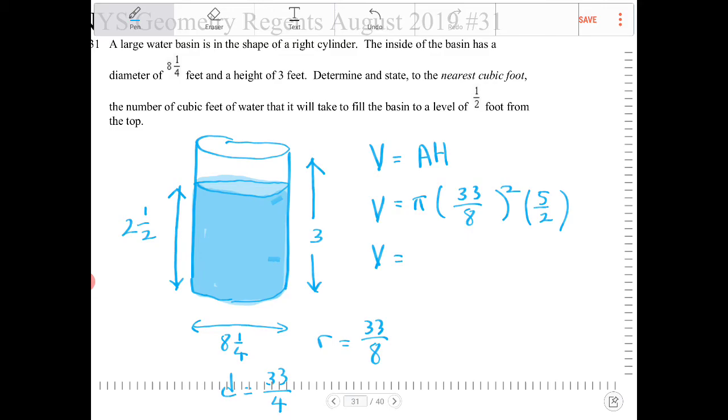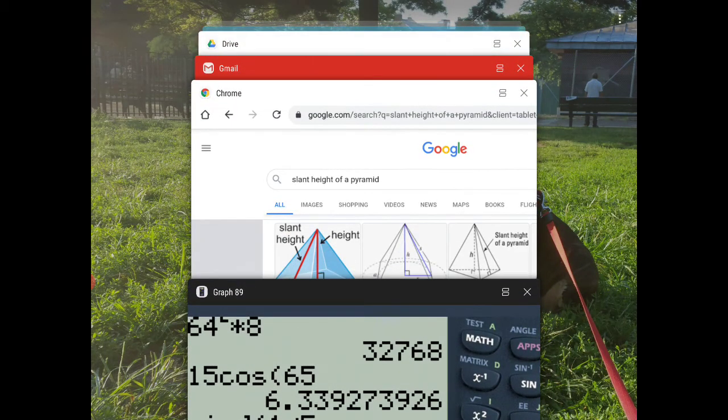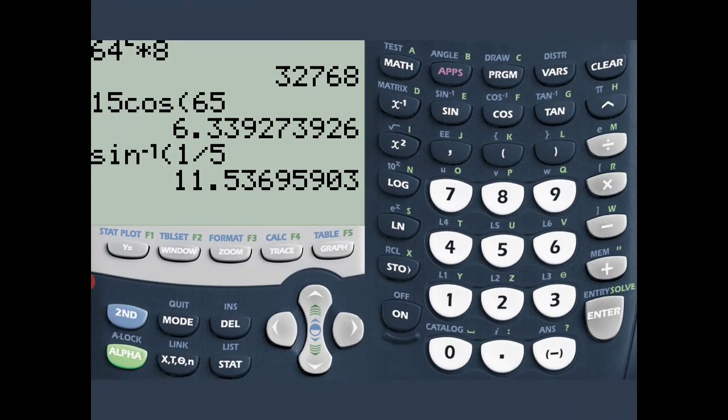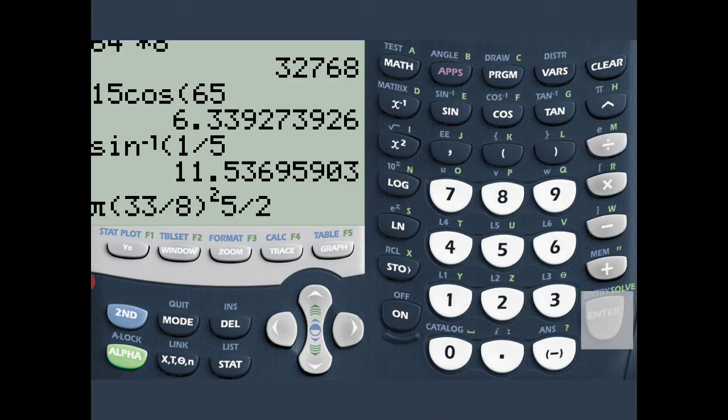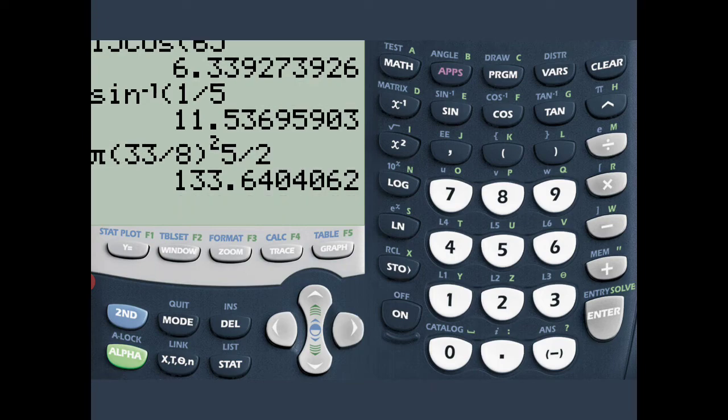So pi times 33 eighths. Whoops. Pi times 33 eighths squared times five divided by two. Or 2.5.